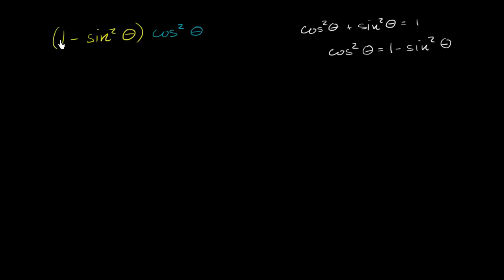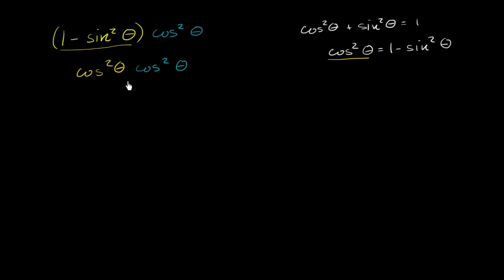So we have two options. We could either replace this 1 minus sine squared theta with cosine squared theta, or replace this cosine squared theta with 1 minus sine squared theta. I'd prefer the former, since it's a more complicated expression. So this will be cosine squared theta times another cosine squared theta, which simplifies to cosine to the fourth of theta.